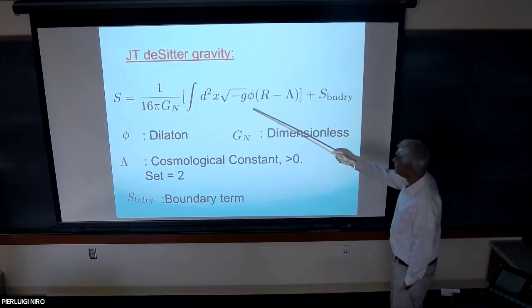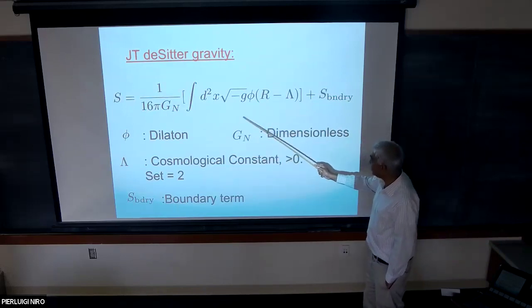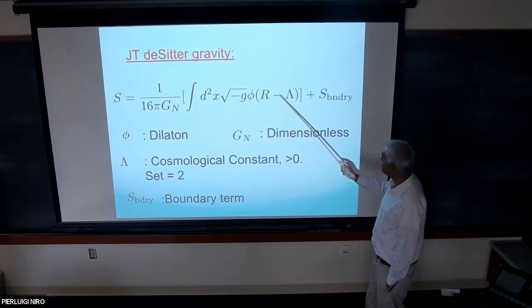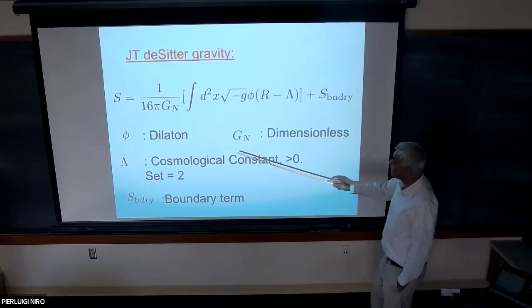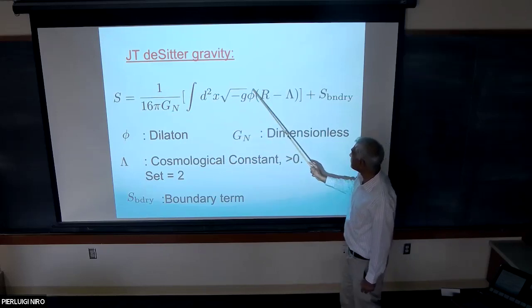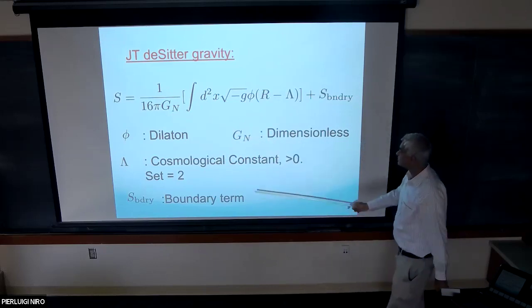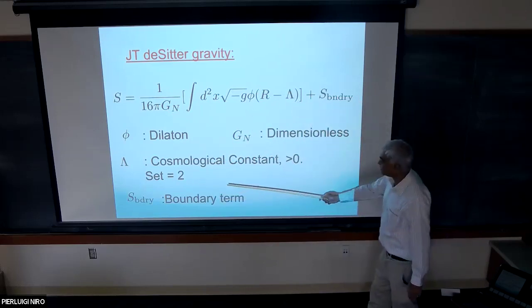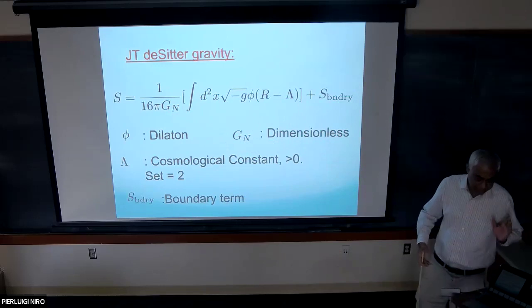Here is JT gravity in two-dimensional de Sitter space. There are two fields: the dilaton and the metric. The action has the dilaton multiplying the Ricci scalar minus the cosmological constant, which is positive. There's also a boundary term which I'm not writing down. Newton's constant is denoted g_N; it is dimensionless in two dimensions because the action involves d²x and R has two derivatives. The cosmological constant has dimensions of mass squared, and conventionally it's taken to be 2.